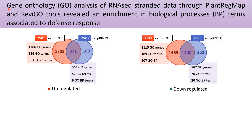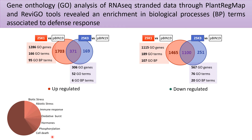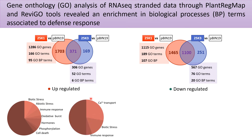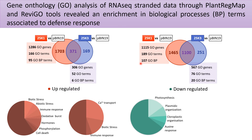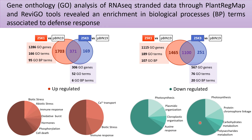We performed a gene ontology analysis of the stranded RNA-seq data using Blast2GO and REVIGO, focusing on biological process terms. In the incompatible interaction, these were the most significant upregulated processes. We also explored biological processes common to both interactions, as well as downregulated processes in the incompatible interaction and those shared between both interactions.